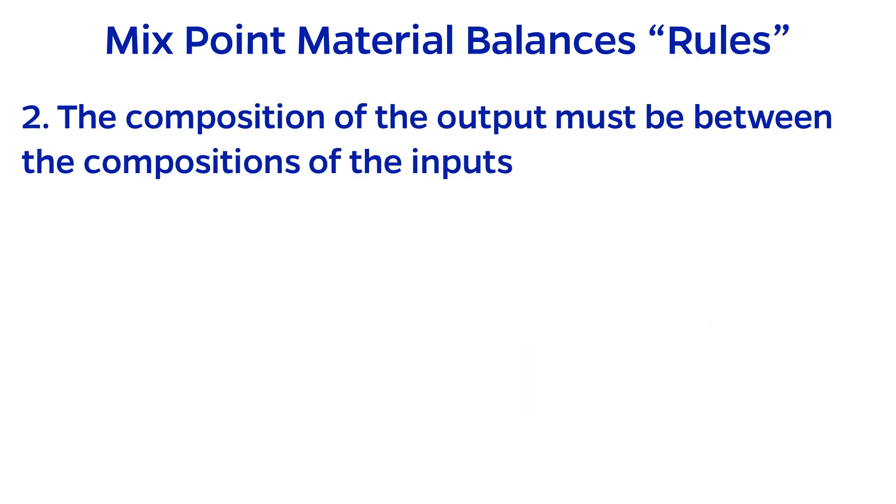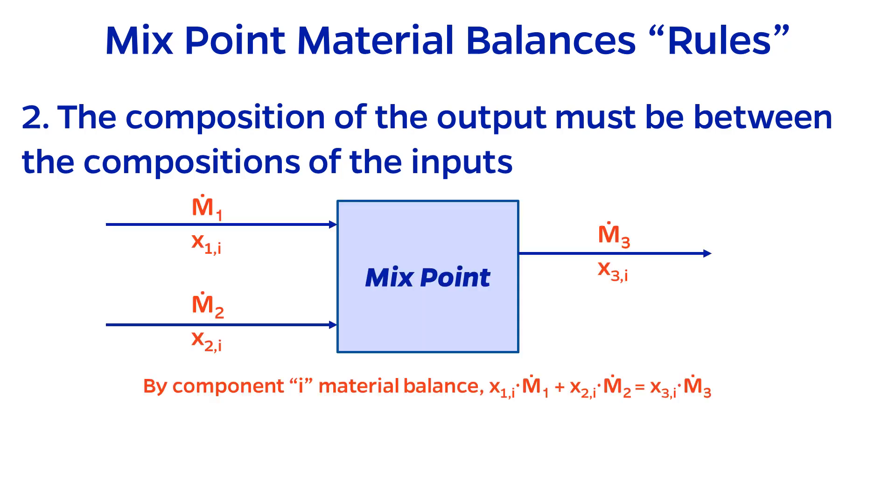Second, the composition of the output stream must always be in between the compositions of the input streams. If you're not sure why, consider a general material balance just on the variables.